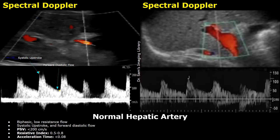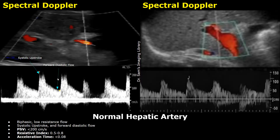These graphs show the normal spectral Doppler waveforms of the hepatic artery. The vertical axis tells us about the blood flow velocity in centimeters per second. The horizontal axis is the time. This line is the baseline — it is the zero point on the vertical axis, so any point on this line equals a velocity of 0 centimeters per second. In normal cases, the hepatic artery has a biphasic low-resistance flow. It is called biphasic because it has two distinct components in one cardiac cycle: a sharp systolic upstroke peak followed by forward flow during diastole.